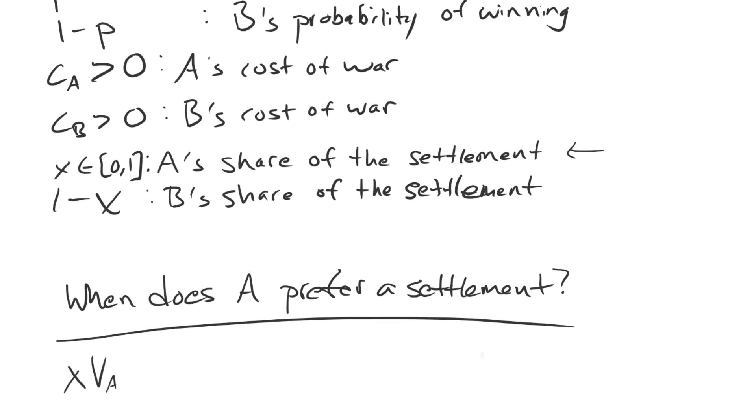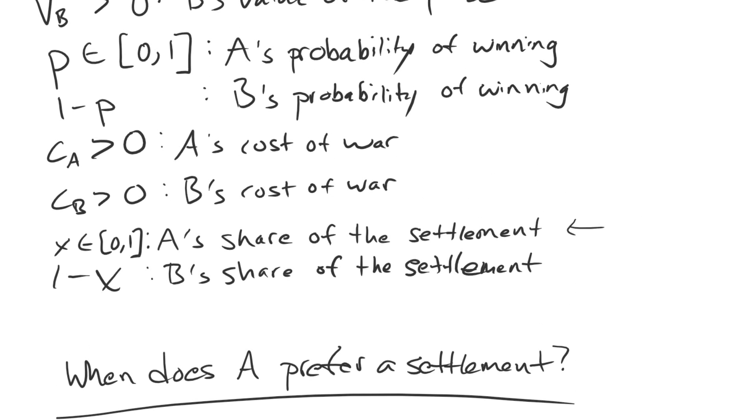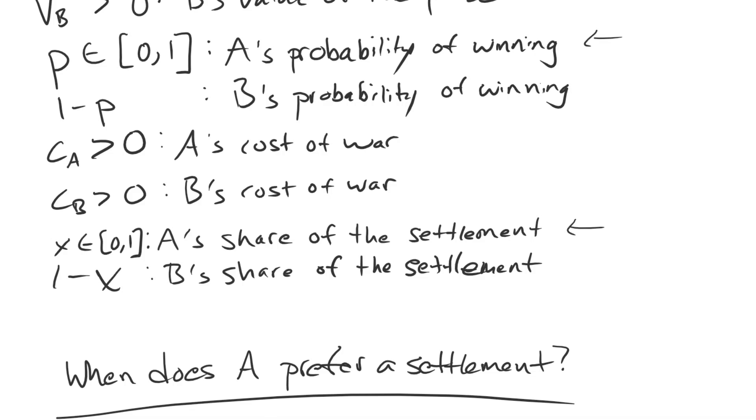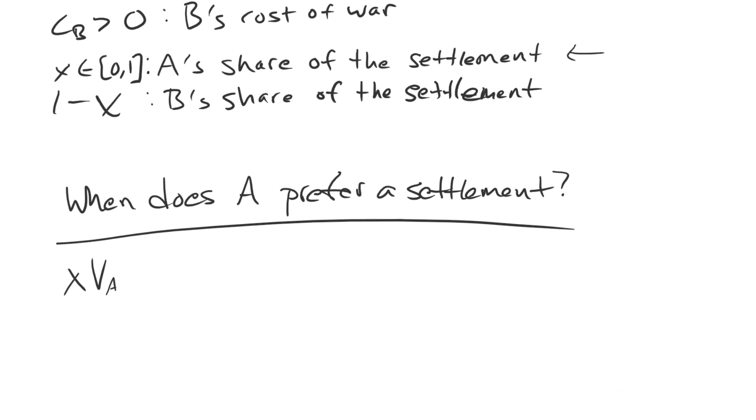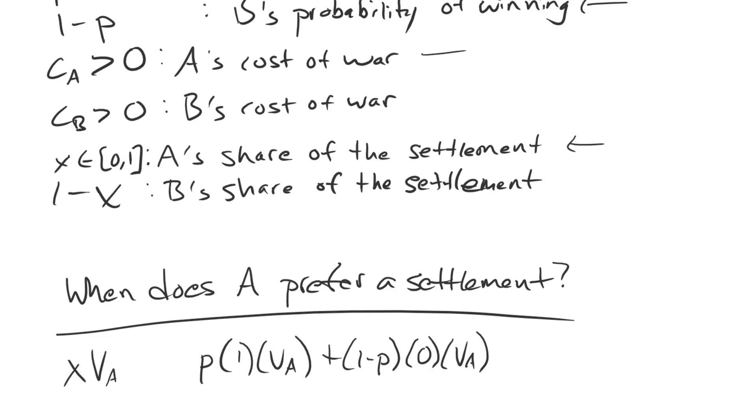If it fights a war, with probability P, A wins. And if it wins, it gets to capture 100% of the entire value VA. If it loses, then it's going to get none of that entire value VA. And regardless, win or lose, we have the costs of war being CA, which we're going to subtract out.